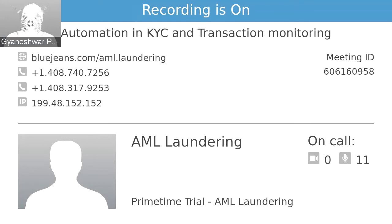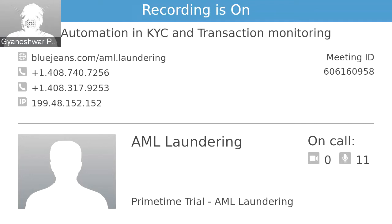We also have an online process. At the same time when generating alerts, the system also considers PEP and watchlist data from different agencies. So we do a lot of checking. Once everything is done, then only the alerts are generated. Once an alert is generated, it's not just a notification — it will give you complete information. It will automatically create a case in the system.